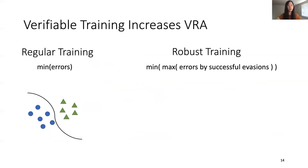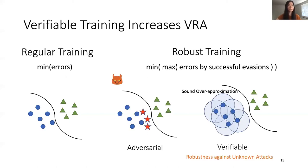A naturally trained classifier may not obtain high verifiable robustness, so we use verifiable training to increase VRA. While regular training minimizes classification errors on training data, robust training solves a minimax problem: we first maximize classification errors over all successful evasions, then minimize such errors to train robust models. We use verifiable training, which uses sound over-approximation to get an upper bound of maximum errors for all potential evasions — bounding even unknown attacks — to achieve VRA.